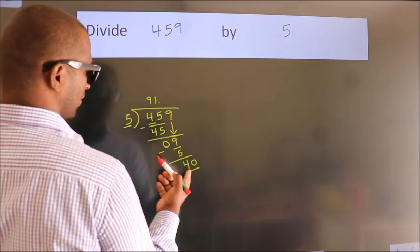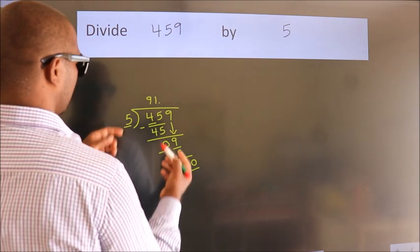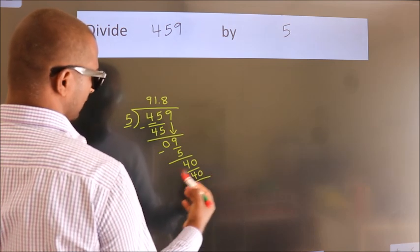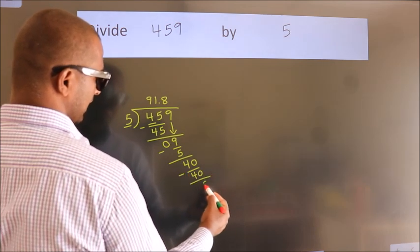When do we get 40? In 5 table: 5 eights, 40. Now we subtract. We get 0.